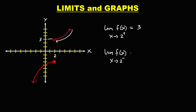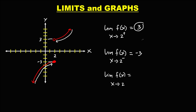For the left side limit, as x approaches positive 2 from the left, the limit is equal to negative 3. To find the limit of f(x) as x approaches positive 2, since the right side limit is not equal to the left side limit, therefore this limit does not exist.